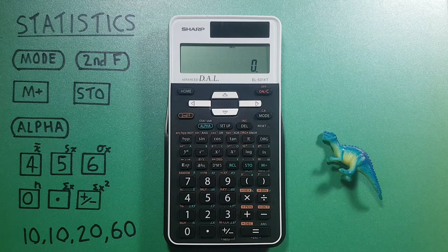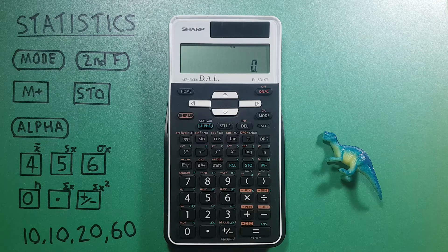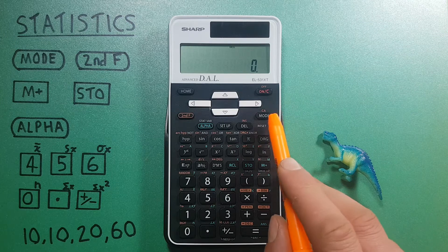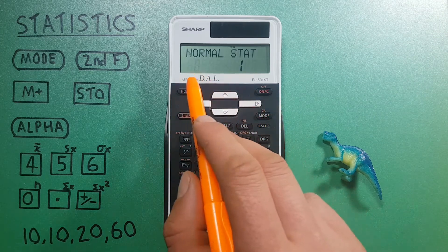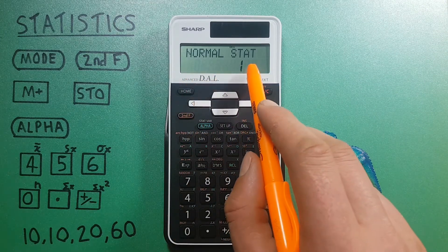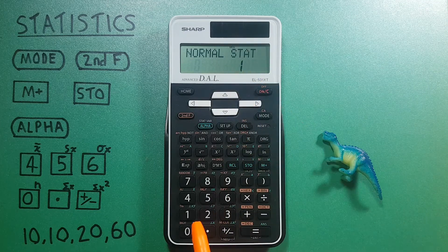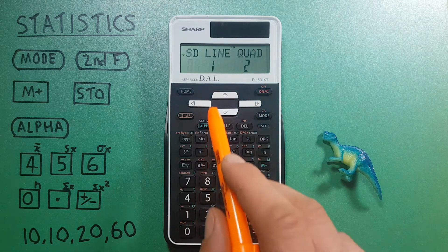To get started we need to turn our calculator into stats mode, so to do this we press the mode button which brings up this menu. We want to go to stats mode so we can press one which brings up this menu.